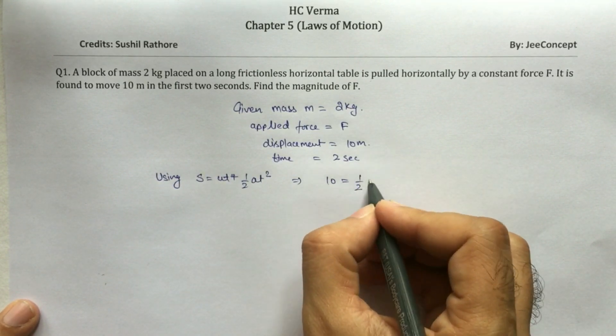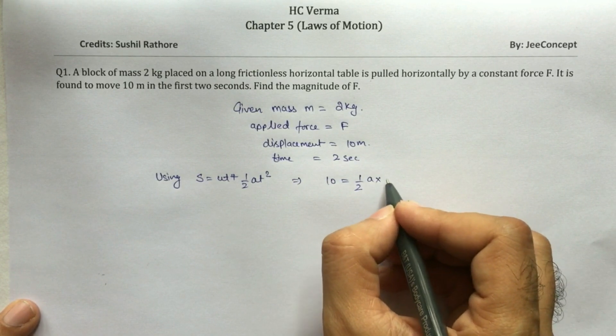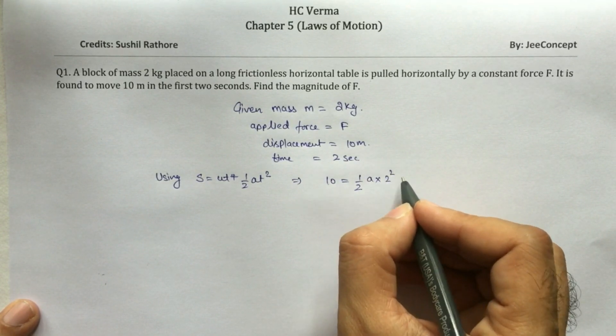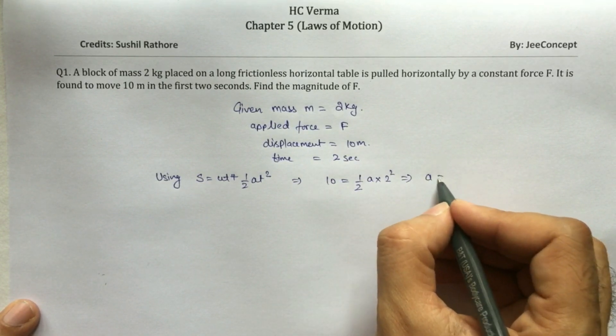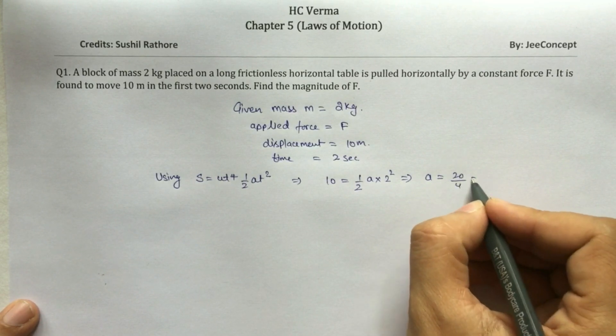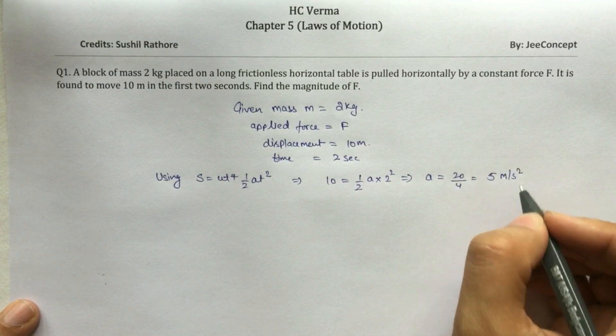So this will become half of acceleration times T squared. T is 2 seconds, that means 2 squared. So this becomes A equals 20 upon 4, that means 5 meters per second squared.